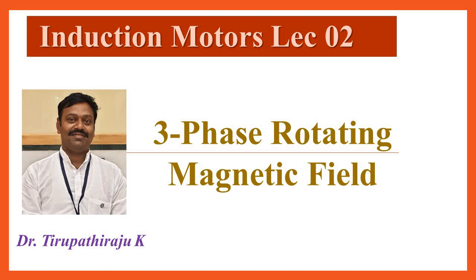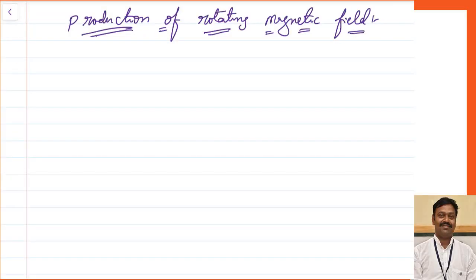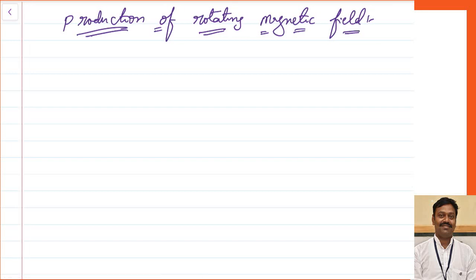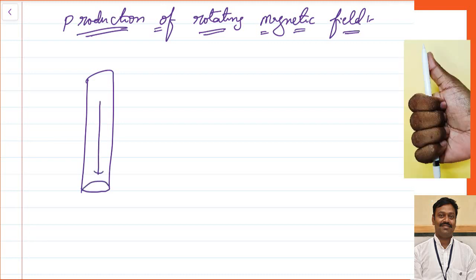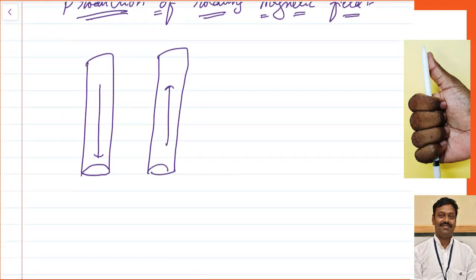Good morning all. Today we are going to see the production of the rotating magnetic field. Before going to this, let us first see the basics that are required. I am just revising these things I have already discussed in DC machines, repeating it so that whoever is seeing this lecture for the first time it will be useful. These basics will complete in 3-4 minutes, then we will go for the rotating magnetic field.